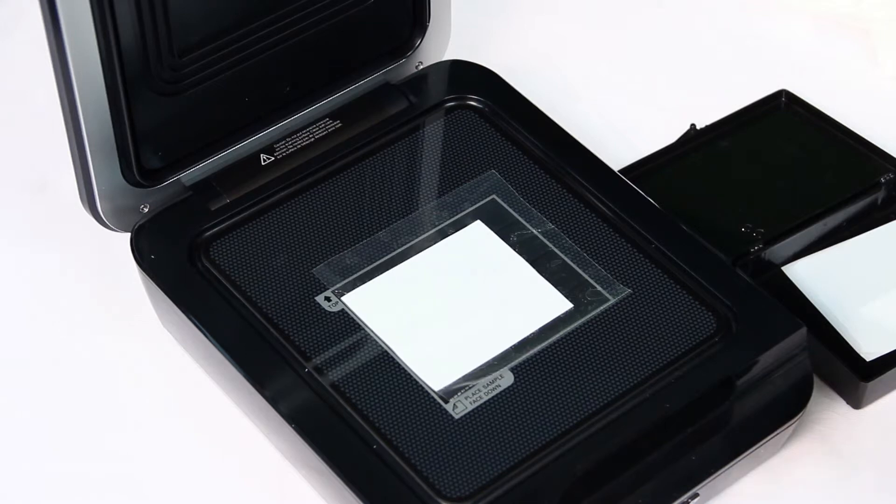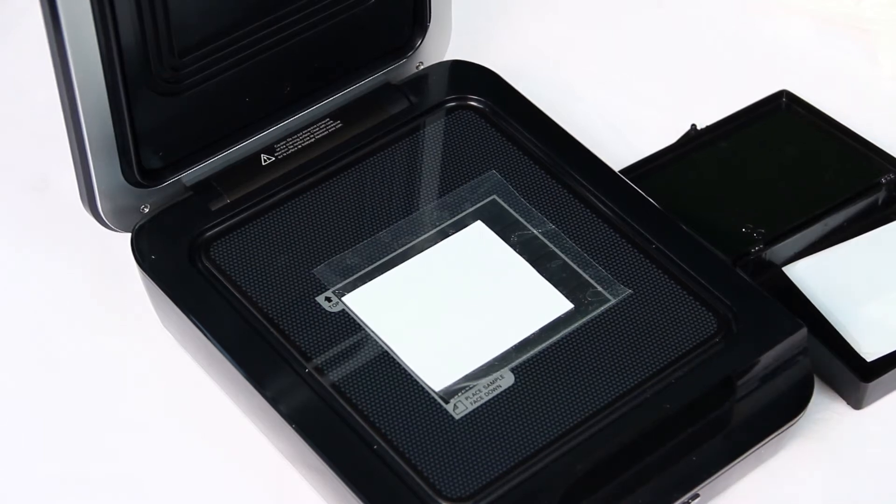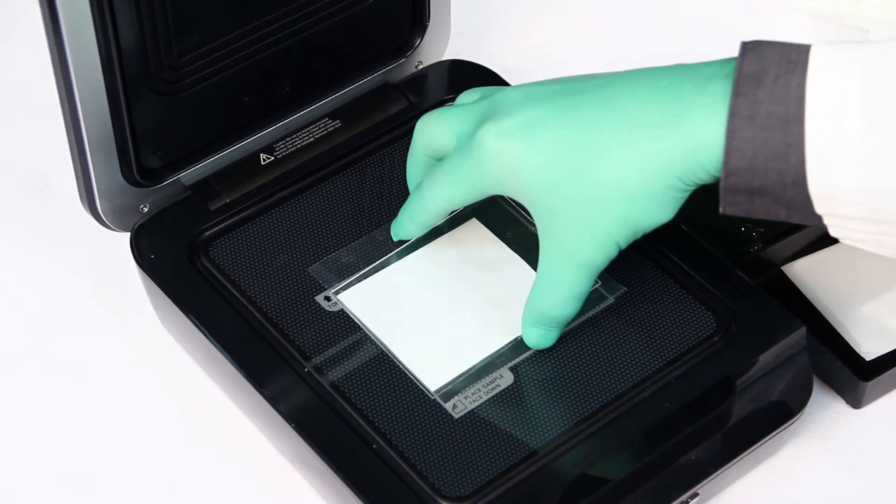If a plastic sleeve is used, it is recommended to place something on top of the blot in order to keep the blot flat. A glass plate from a mini-gel works well for keeping the blot flat.